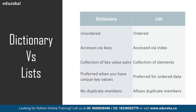A list has indexes, but in order to access elements in a dictionary, we use the keys as indexes. A list is a collection of elements, but in a dictionary we have key-value pairs as elements, which is unlike any other data type in Python. A list is often preferred for ordered data, but a dictionary is preferred when the data has unique key values. Also, a list can have duplicate elements, but in a dictionary we do not have duplicate keys, although we can have duplicate values.